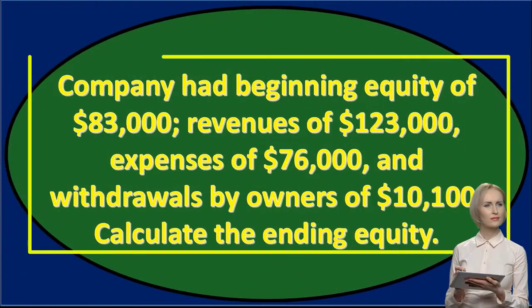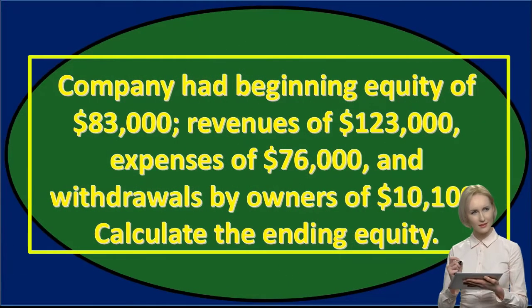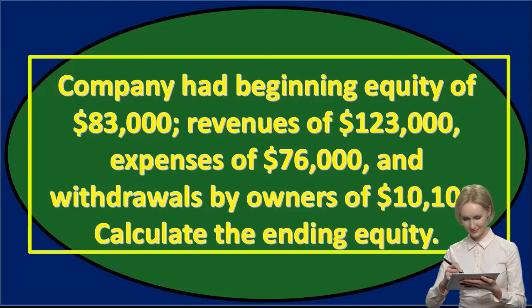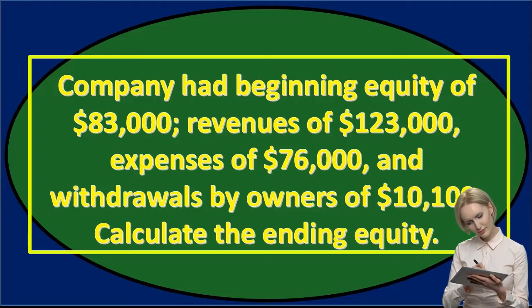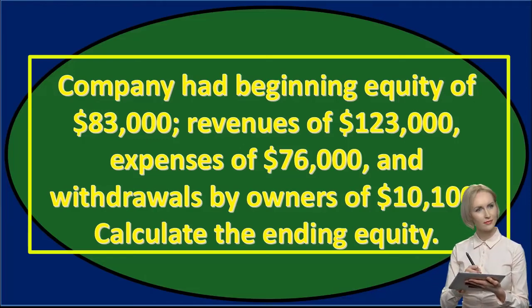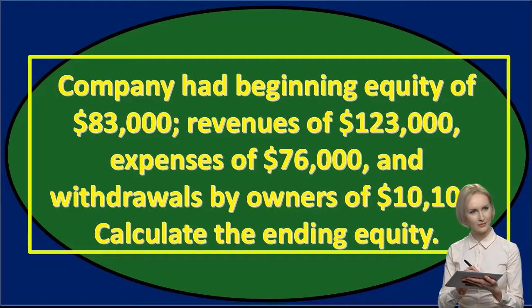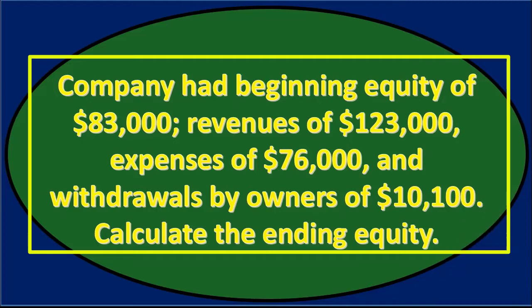First question: a company had beginning equity of $83,000, revenue of $123,000, expenses of $76,000, and withdrawals by owner of $10,100.